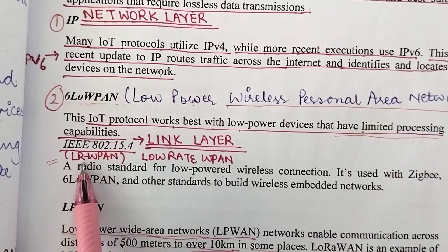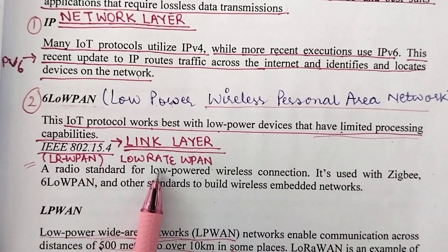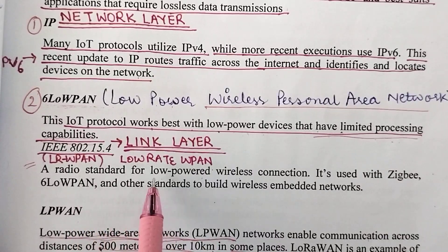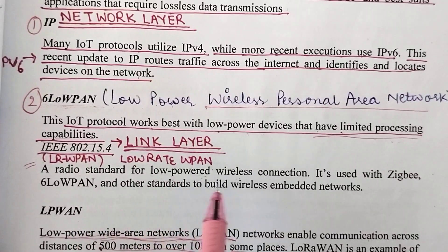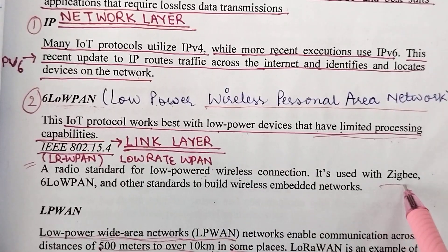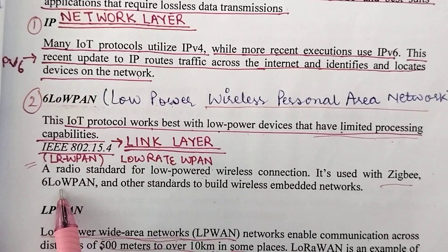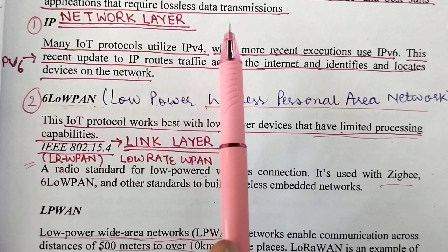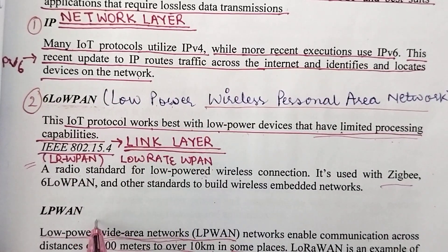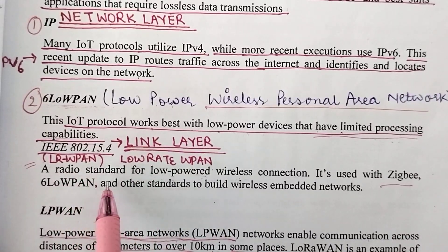The full form of LRWPAN is Low Rate Wireless Personal Area Networks. It is basically a standard for radio wave communication for connections which are low powered and wireless. It is used with some other standards or protocols like ZigBee, 6LoWPAN, and other standards. The 6LoWPAN standard we have already studied when we were studying the protocols for the network layer. Now let us look at some other standards with which LRWPAN is embedded.